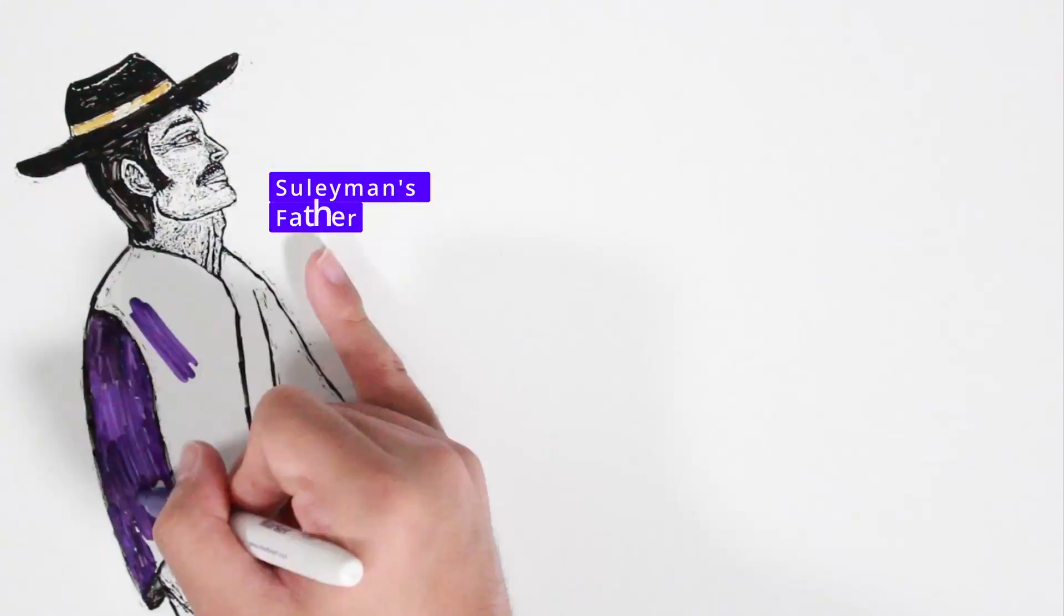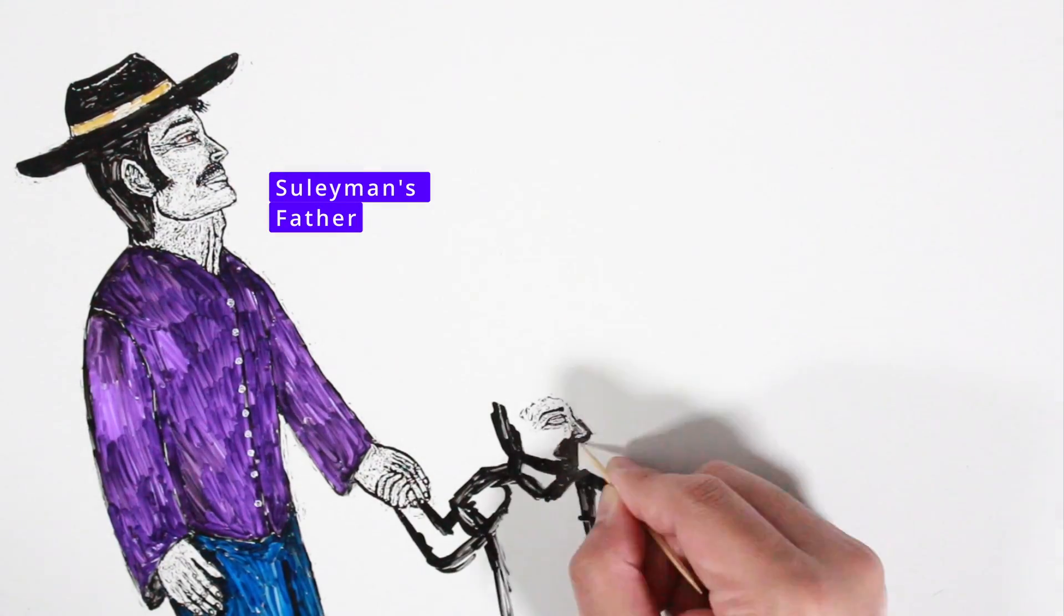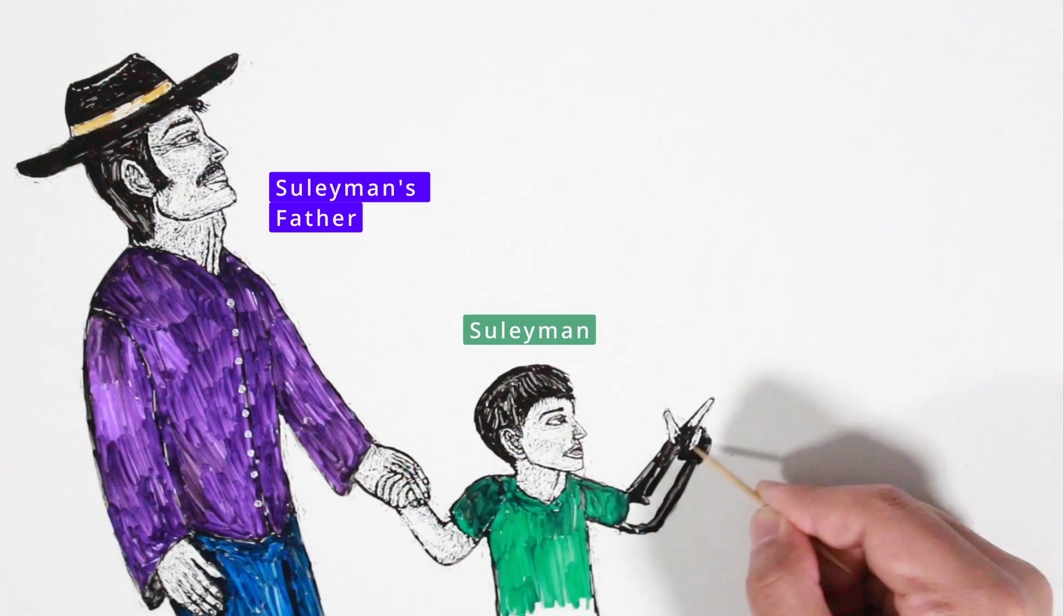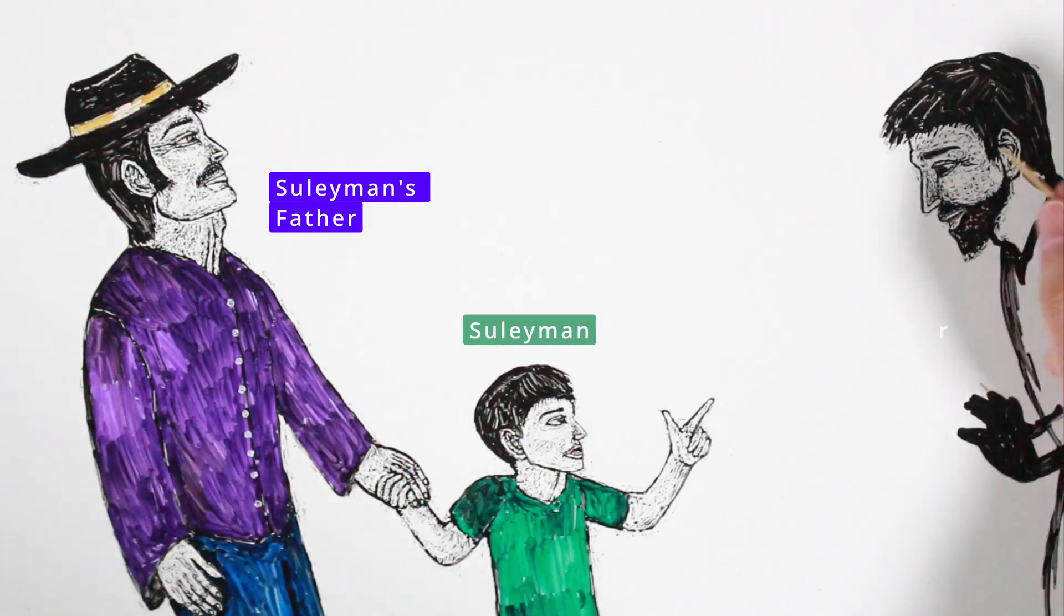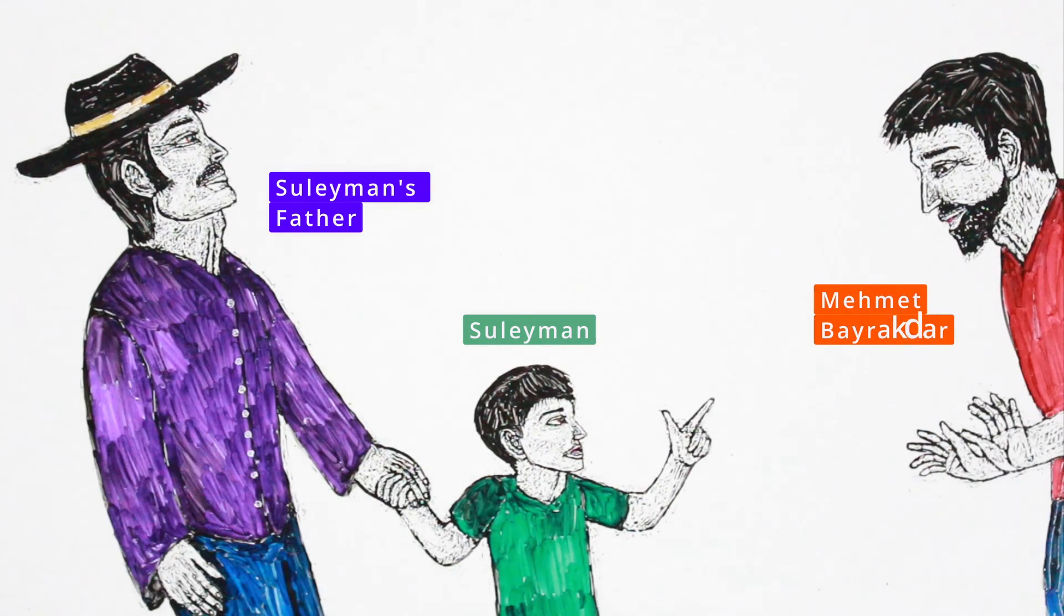Suleyman really disliked Mehmet Bayraktar and said that he would kill him. One day, Suleyman saw Bayraktar, pointed to him and said, 'He killed me,' and asked his father to give him a gun so that he could kill Bayraktar.